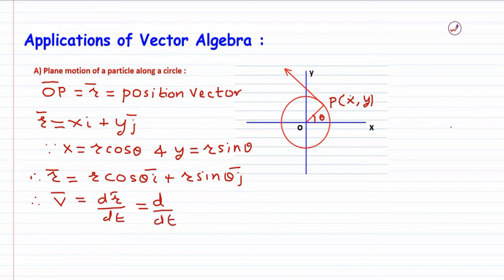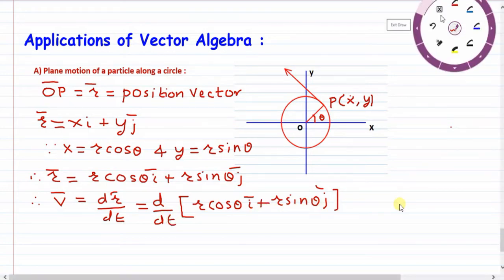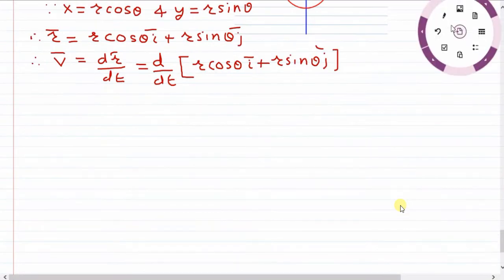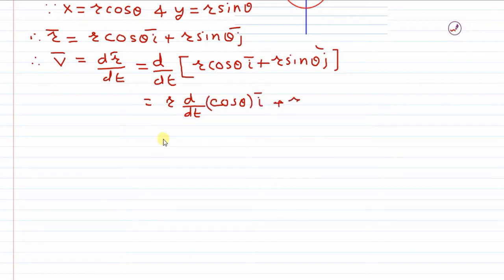Now, v-bar will be equal to dr-bar by dt — that is, the derivative of the position vector is nothing but the velocity vector. So we take d by dt of r cos theta times i plus r sin theta times j, bringing the derivative sign inside. Since r is a constant, we differentiate cos theta and sin theta with respect to t, giving r times the derivative of cos theta times i, plus r times the derivative of sin theta times j.